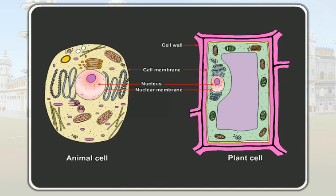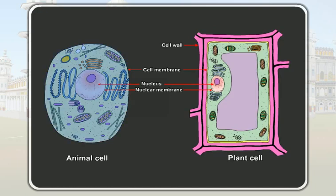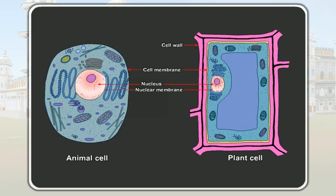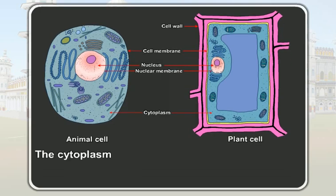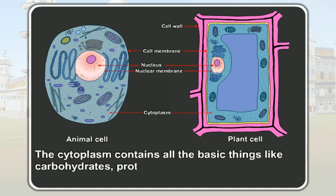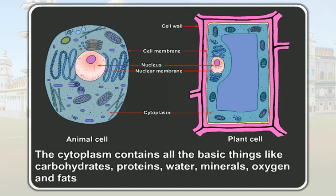Students, now let us observe the plant cell and the animal cell again. There is a jelly-like substance in between the cell membrane and the nucleus. It is called the cytoplasm. The cytoplasm contains all the basic things like carbohydrates, proteins, water, minerals, oxygen and fats needed for the growth of living organisms.